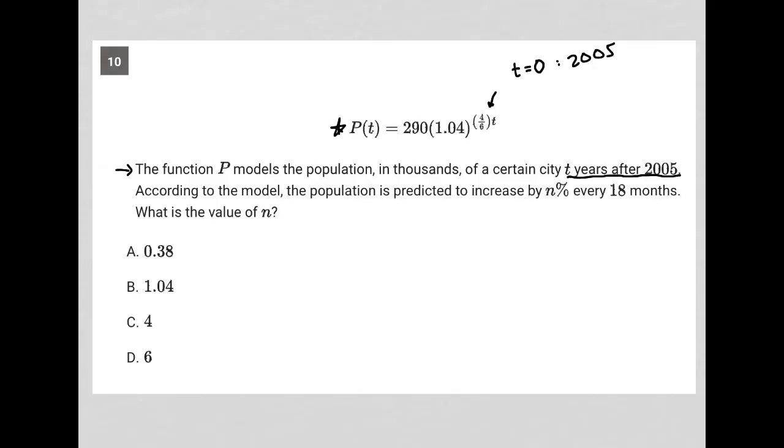According to the model, the population is predicted to increase by n percent every 18 months. Okay. What is the value of n? So it's predicted to increase by n percent every 18 months. All right.